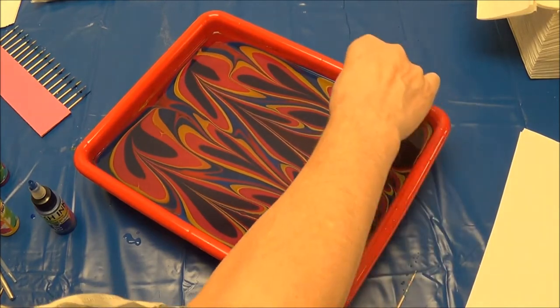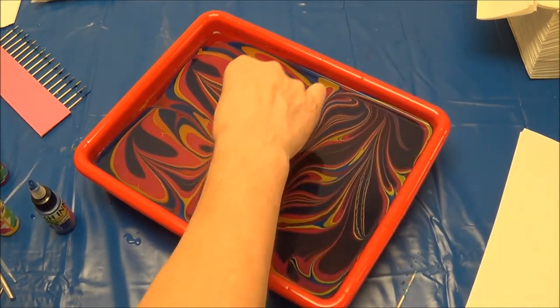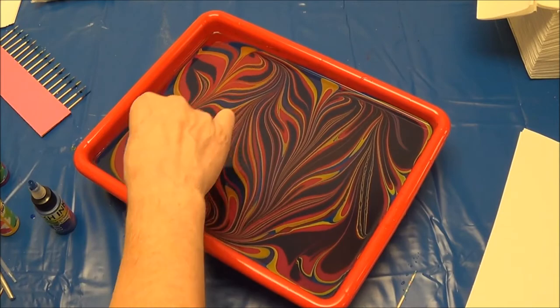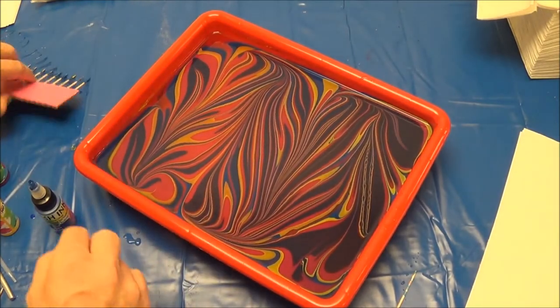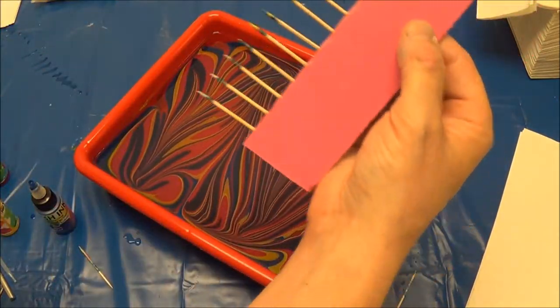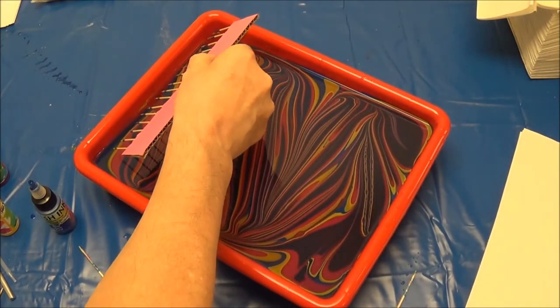Just go back and forth and be creative. I made this marbling comb out of toothpicks and a piece of corrugated cardboard.